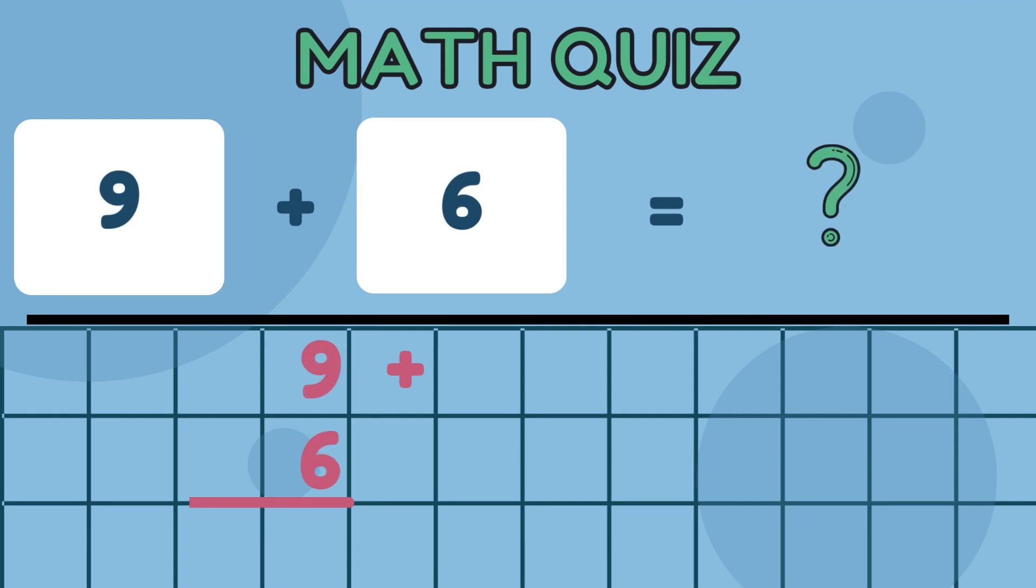Now, let's try something a little trickier. How about 9 plus 6? Absolutely. 9 plus 6 equals 15. You guys are doing great.